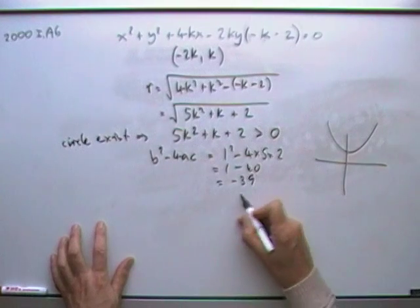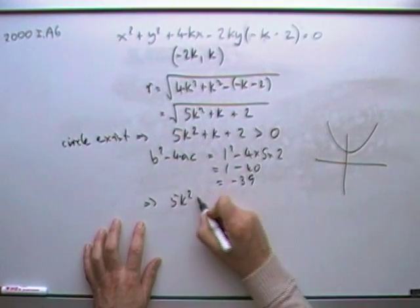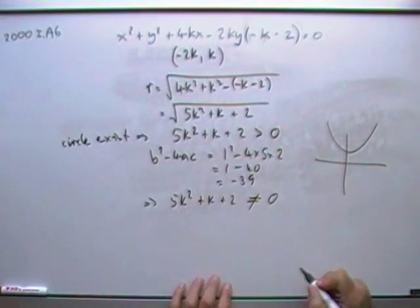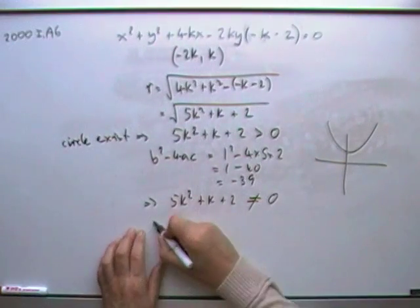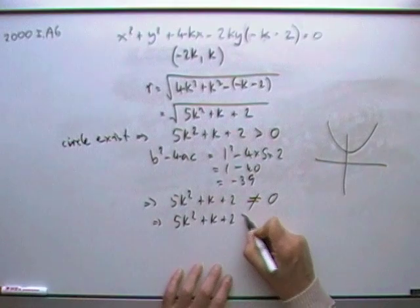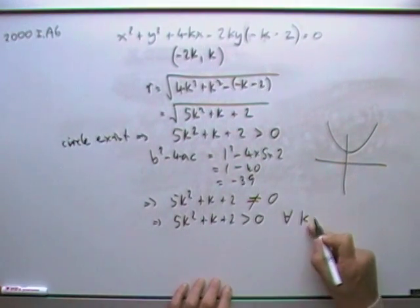Negative 39 means it's never equal to 0. That means that 5k squared plus k plus 2 is never equal to 0, which means it's always above, it's always positive, which means 5k squared plus k plus 2 is greater than 0 for all k, for all values of k.